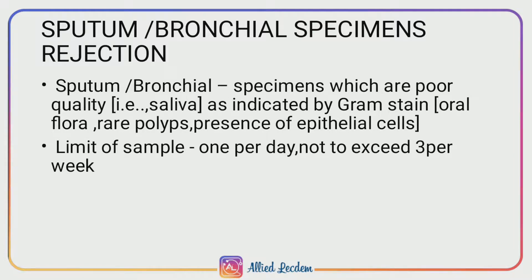Sputum or bronchial specimens, like bronchoalveolar lavage collected through a bronchoscope, having poor specimen quality — that is, saliva as indicated by Gram stain showing oral flora, rare polymorphs, or presence of epithelial cells, which normally line the surface of the body.